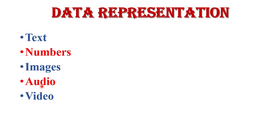Next is audio — data or information which is to be transmitted is also in the form of sound, which can be recorded or broadcasted. Next is video — video refers to the broadcast of data in the form of pictures or movies. So these are the representations of data.